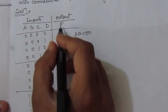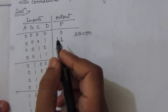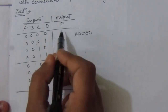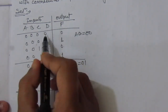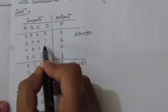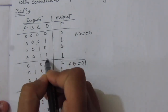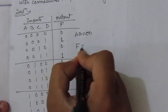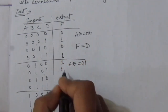Now we have to express this output function in terms of C and D as per the question. We can see that F is the same as input D. Whenever D is 0, F is 0; D is 1, F is 1; D is 0, F is 0; D is 1, F is 1. So we can write it as F equal to D.